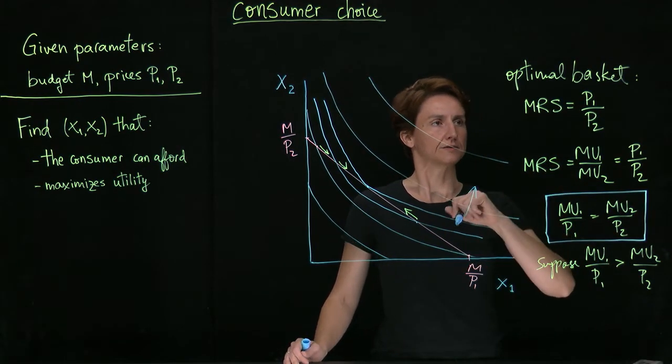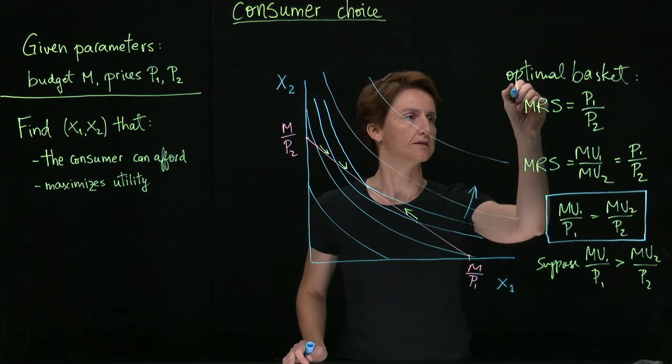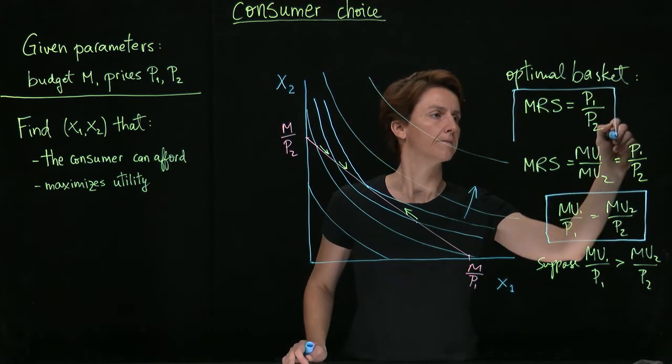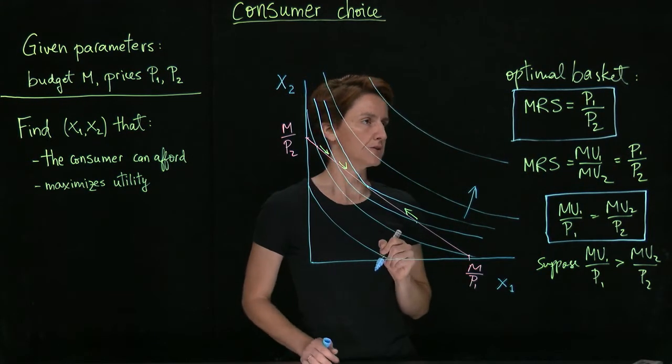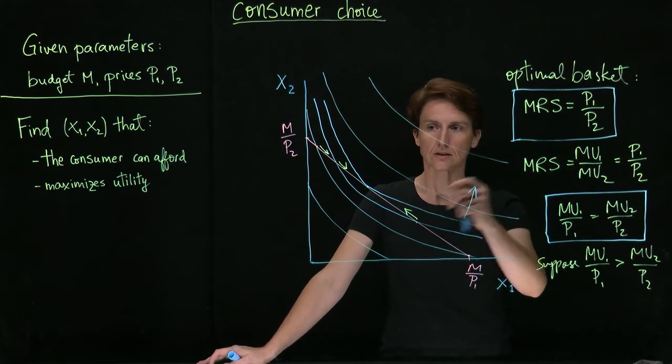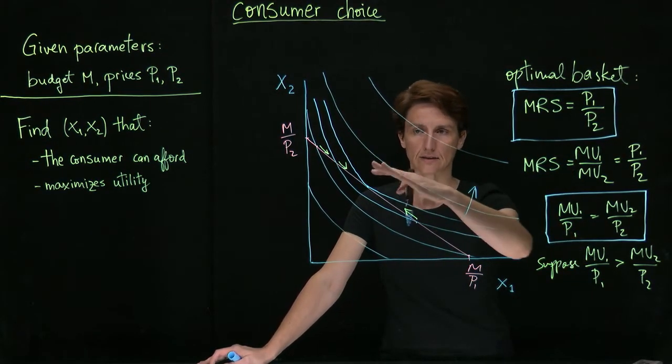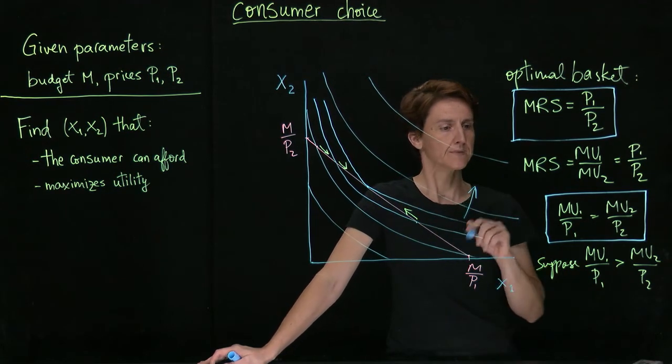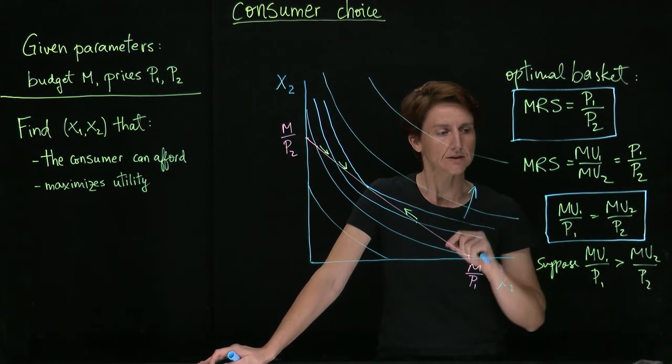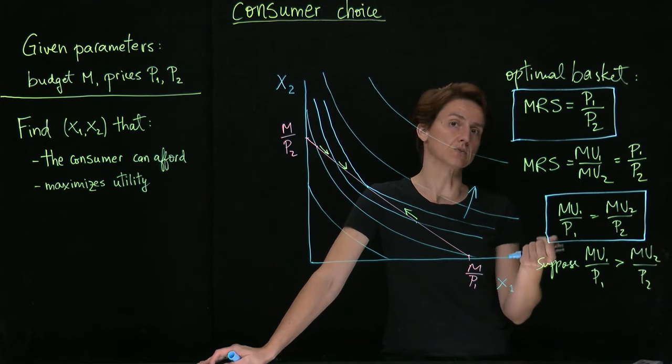So this is another way of framing the condition. We can think of the solution as either emerging from the tangency condition, the condition that there's a single point of contact between the highest indifference curve and the budget constraint, or from this condition that we'll call a rational spending rule.